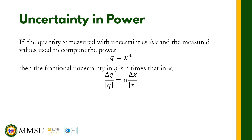Finally, if we are given a power — Q equals X raised to n — the formula for uncertainty is: delta Q equals n times delta X over the absolute value of the mean value of X, multiplied by the absolute value of the mean value of Q. That is our formula for the uncertainty in Q for a power function.